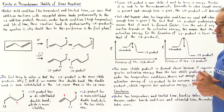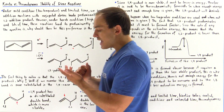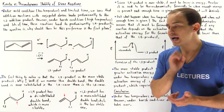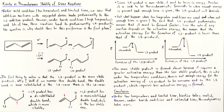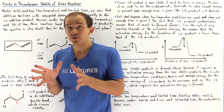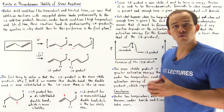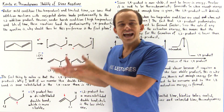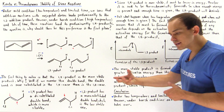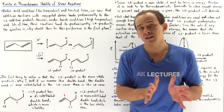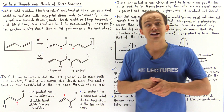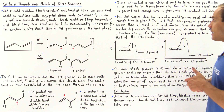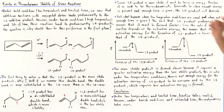The next question is: why does the less stable product form over the more stable product under low temperature conditions with limited time? When dealing with low temperatures, kinetics takes over. When dealing with high temperatures, thermodynamics takes over. Remember, thermodynamics deals with stability, while kinetics deals with the rate of reaction, the speed, and the transition state.